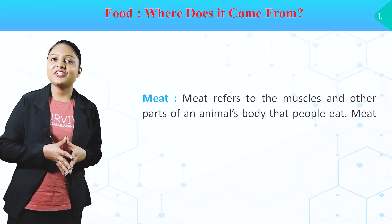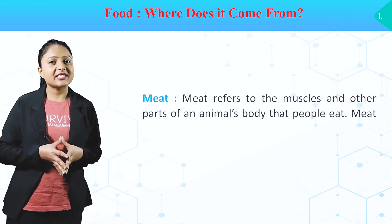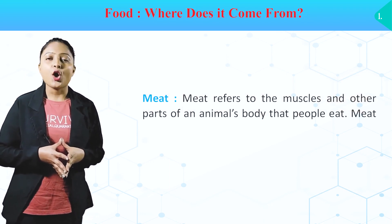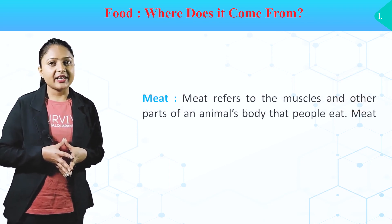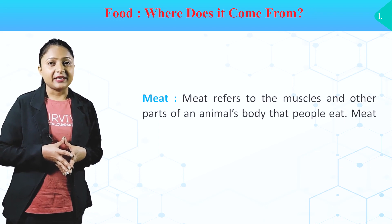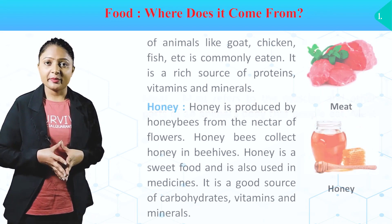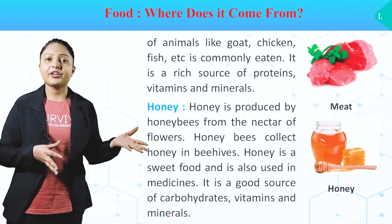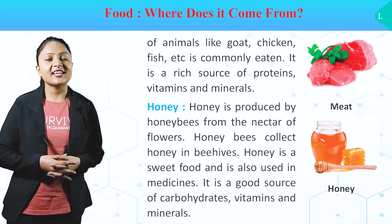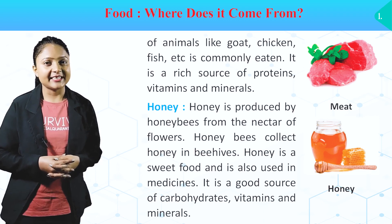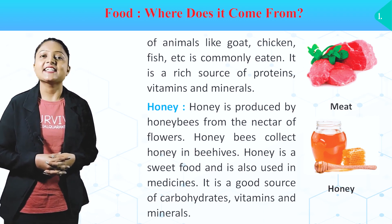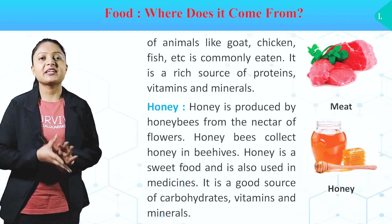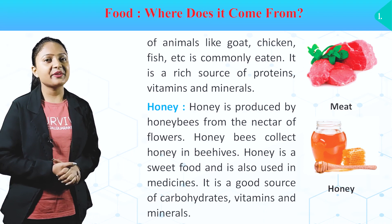Meat. Meat refers to the muscles and other parts of an animal's body that people eat. Meat of animals like goat, chicken, fish, etc. is commonly eaten. It is a rich source of proteins, vitamins and minerals.